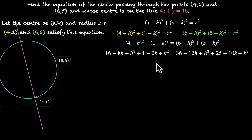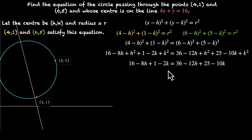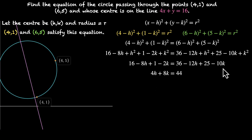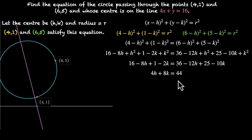Both sides have h squared plus k squared, so we can cancel that out. This becomes 16 minus 8h plus 1 minus 2k equals 36 minus 12h plus 25 minus 10k. Combining like terms, minus 8h and minus 12h gives 4h on the left; minus 2k and minus 10k gives plus 8k. Then 36 plus 25 minus 17 gives 44. So 4h plus 8k equals 44, and dividing by 4 gives h plus 2k equals 11.